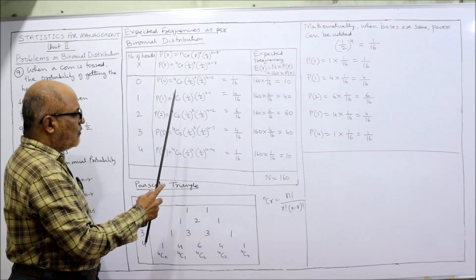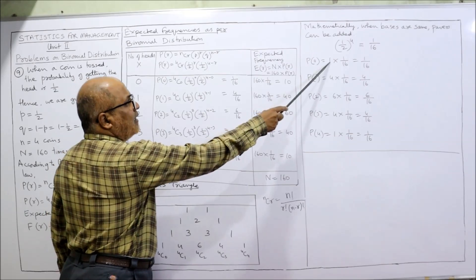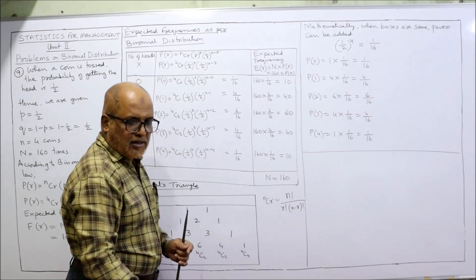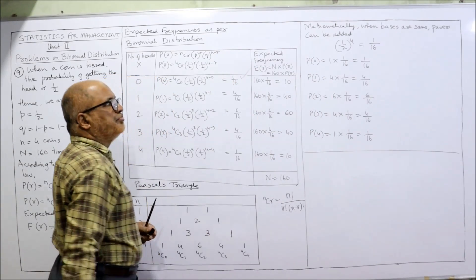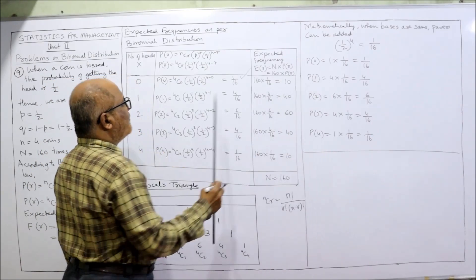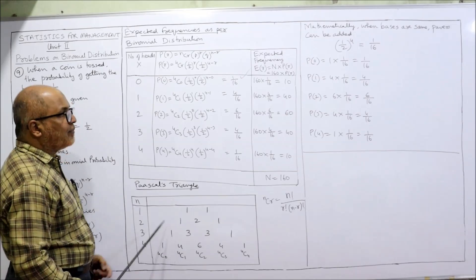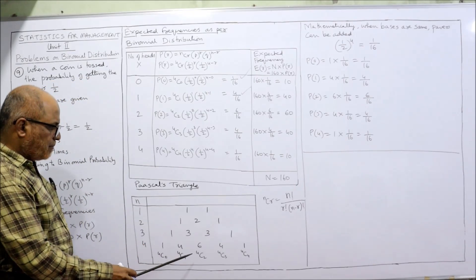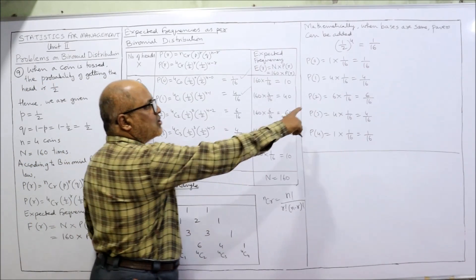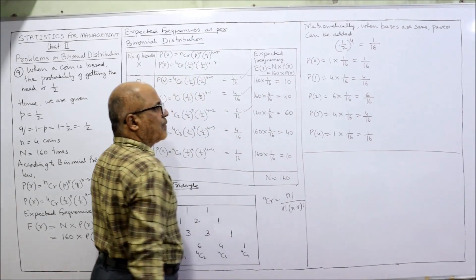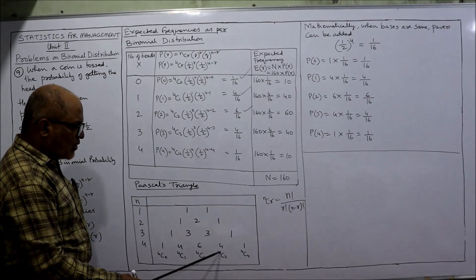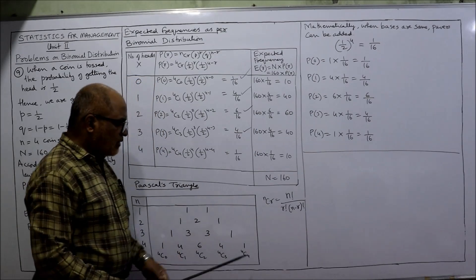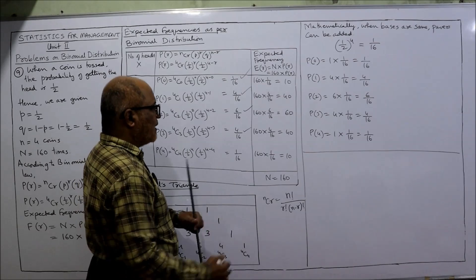Now simplifying each P(r): P(0) = 4C0 × (1/16) = 1 × 1/16 = 1/16. P(1) = 4C1 × 1/16 = 4 × 1/16 = 4/16. P(2) = 4C2 × 1/16 = 6 × 1/16 = 6/16. P(3) = 4C3 × 1/16 = 4 × 1/16 = 4/16. P(4) = 4C4 × 1/16 = 1 × 1/16 = 1/16.